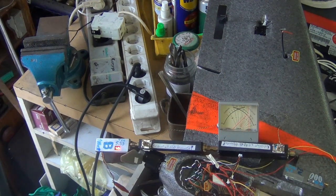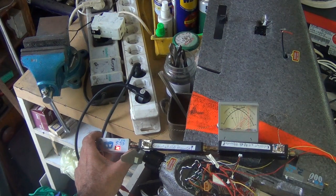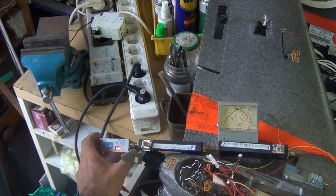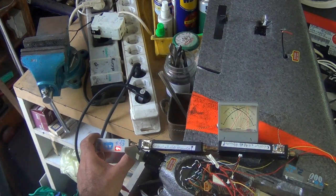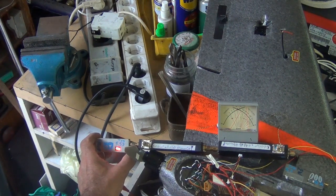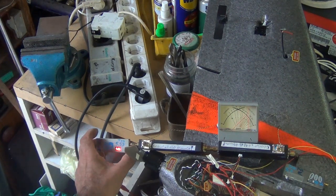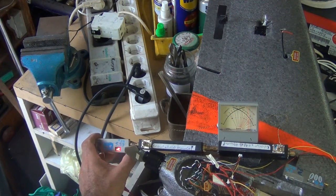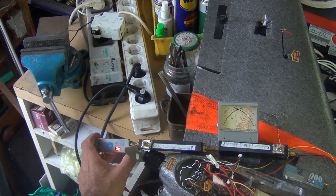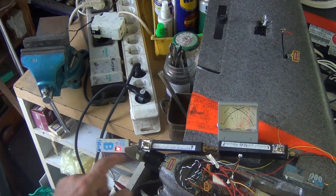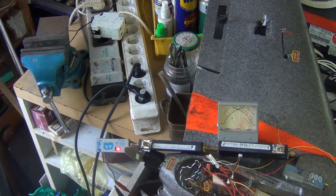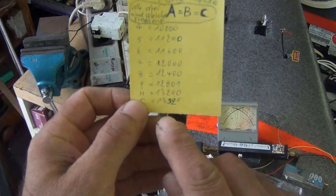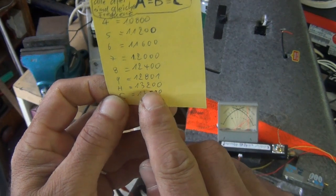Now I change the frequency. Channel 4, 5, 6, 7, 8, channel 9, H. Channel H. Again, the best. This antenna is matched on channel H, this is 1.32 gigahertz.